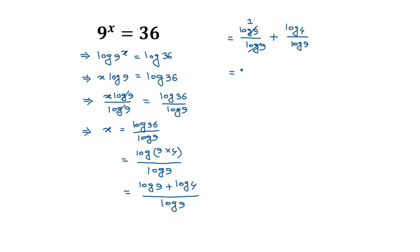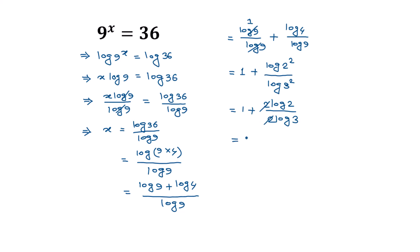Splitting the fraction, log 9 divided by log 9 cancels to give 1, so we can write this as 1 plus log of 4 divided by log of 9. We can write 4 as 2 squared and 9 as 3 squared. Applying the formula log a to the power b equals b times log a, this becomes 1 plus 2 times log 2 divided by 2 times log 3. Cancelling the 2s, we get 1 plus log 2 divided by log 3.